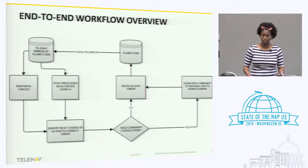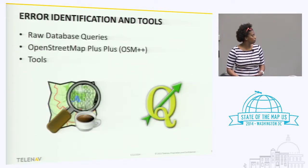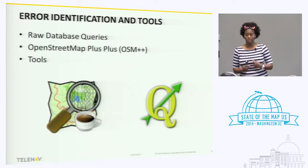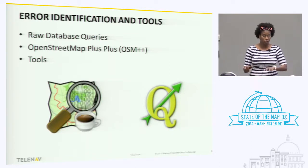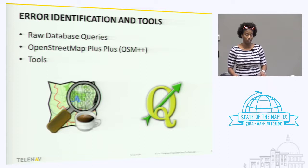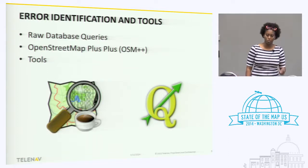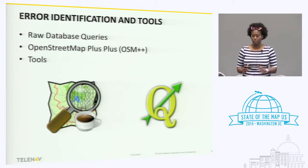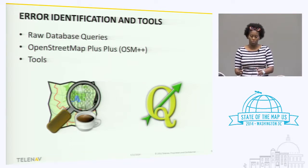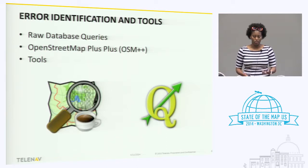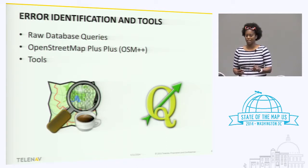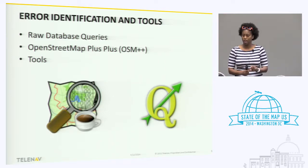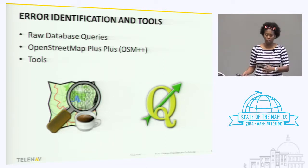Now I'll talk about error identification. My domain is not error identification, but I can give you this really short overview of how we identify errors. One is raw database checks. As I said earlier, we are concerned about portions of the OSM data that affect routing and guidance. For guidance, we look at certain tags that would affect the routing, and also the guidance — the name of the street, cardinal direction, and so on.